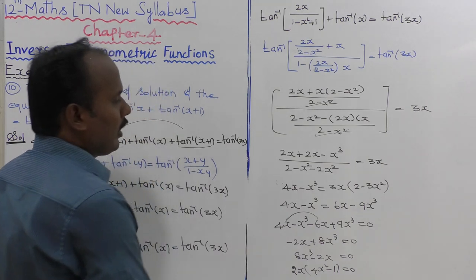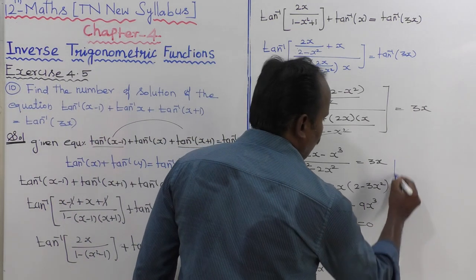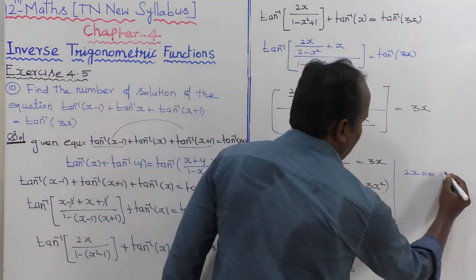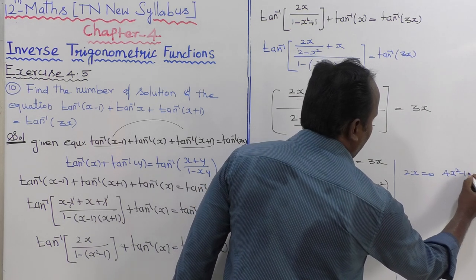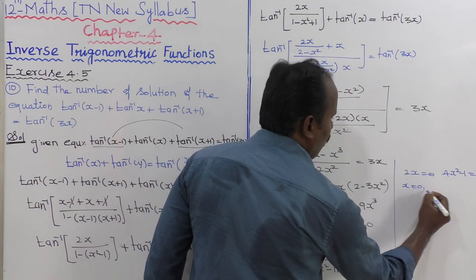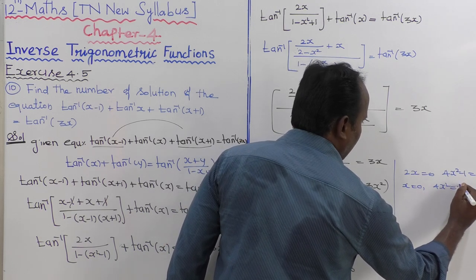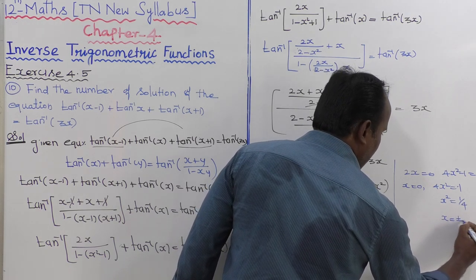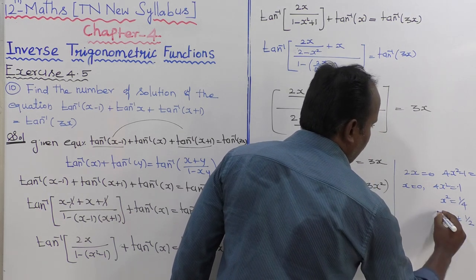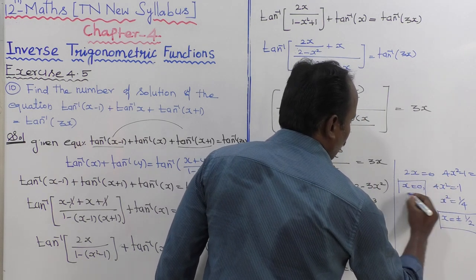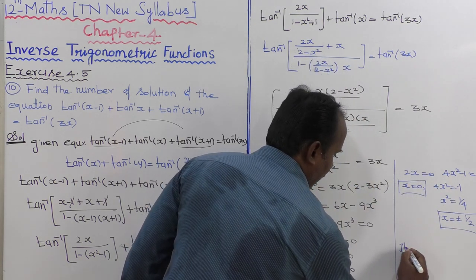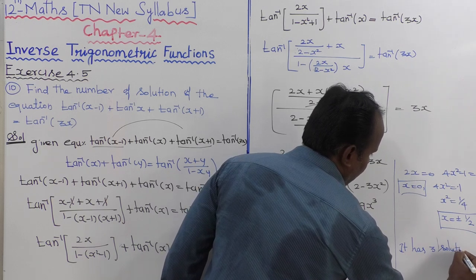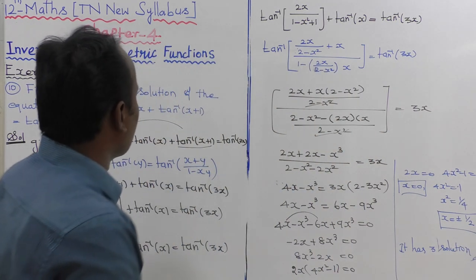The first factor gives 2x equals 0, so x equals 0. The second factor gives 4x squared minus 1 equals 0, so 4x squared equals 1, x squared equals 1 by 4, and x equals plus or minus 1 by root 2. So the given equation has 3 solutions.